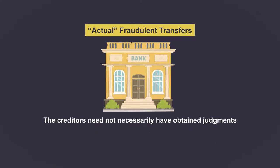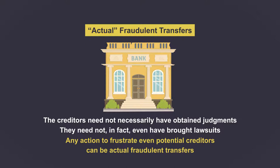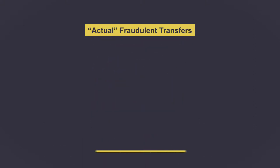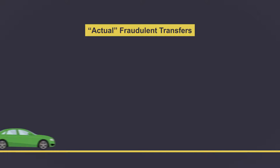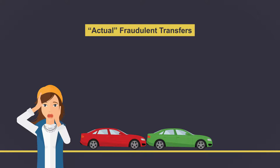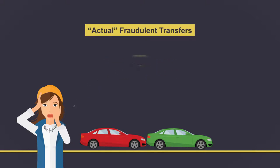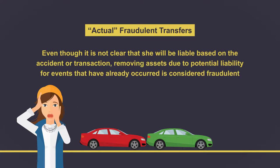For these purposes, the creditors need not have necessarily already obtained judgments — they need not, in fact, even have brought the lawsuits. Any action to frustrate even potential creditors can be an actual fraudulent transfer. For example, if a person has possibly committed a tort, such as negligently causing a car accident, or has been involved in a transaction for which she thinks she may be subjected to lawsuits, and then gifts assets to another person, this also would likely be considered a fraudulent conveyance. Even though it's not clear that she will be liable based on the accident or transaction, removing assets due to potential liability for events that have already occurred is considered fraudulent.